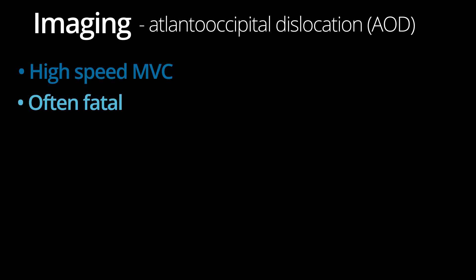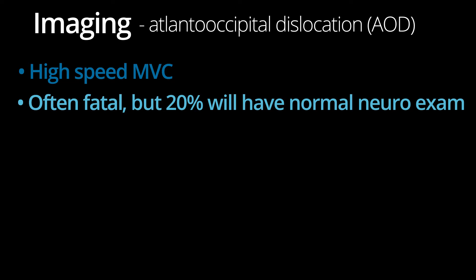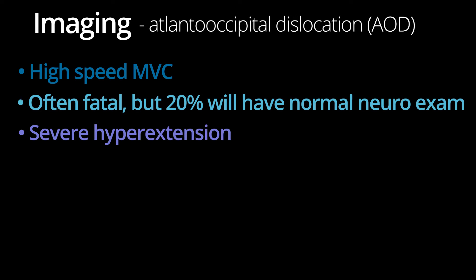Frequently, this injury is immediately fatal because of injury to the brainstem or vessels. However, up to 20% of patients with AOD will have a normal neuro exam, and therefore sometimes the diagnosis will be delayed. The mechanism of injury is felt to likely be the result of severe hyperextension. The best first test is CT, given that radiographs can miss up to half of cases of AOD.